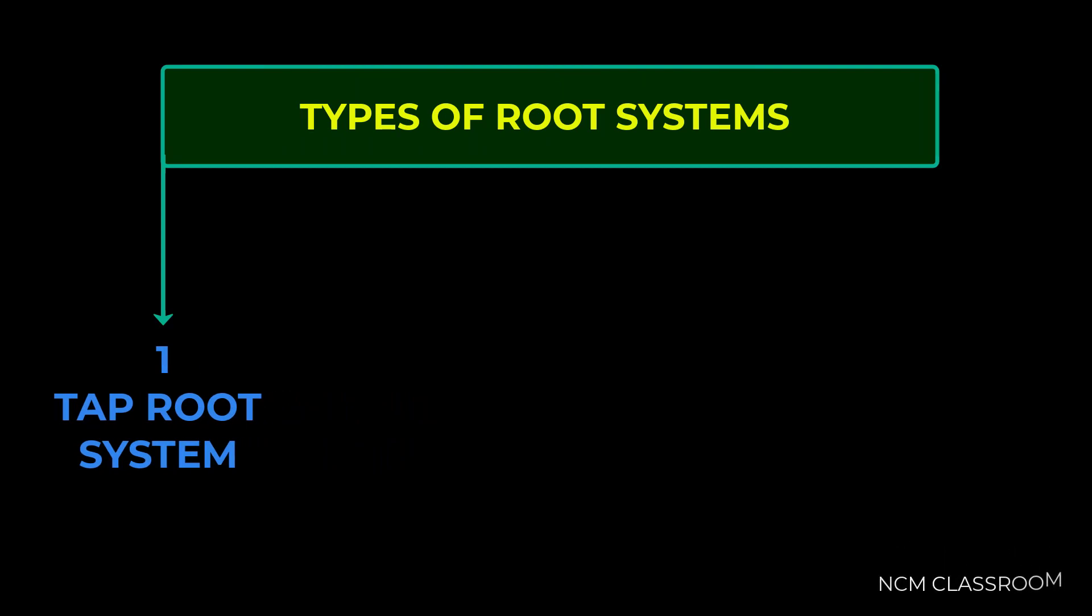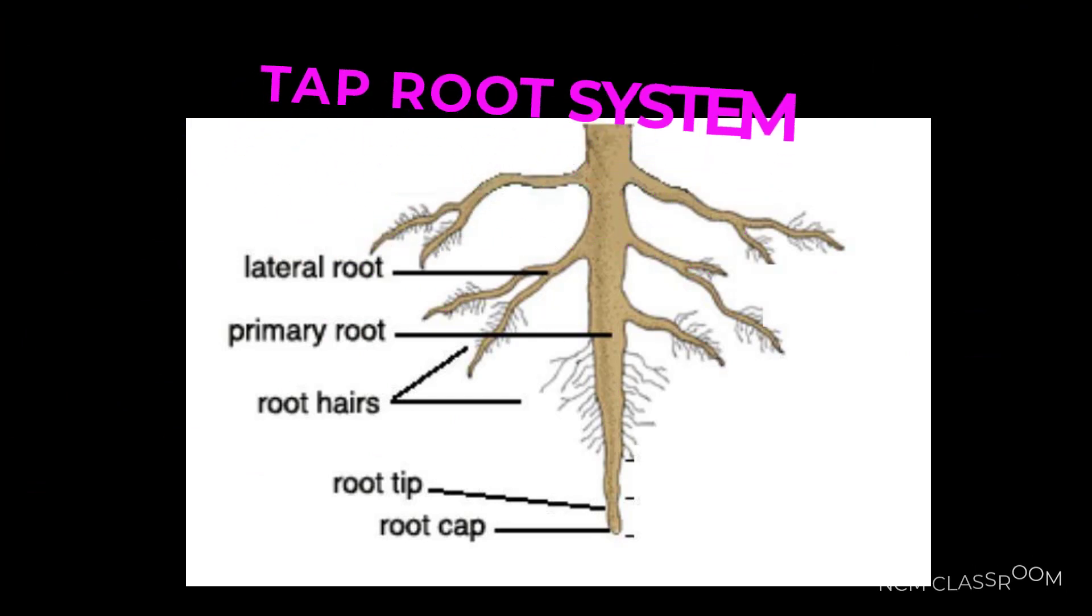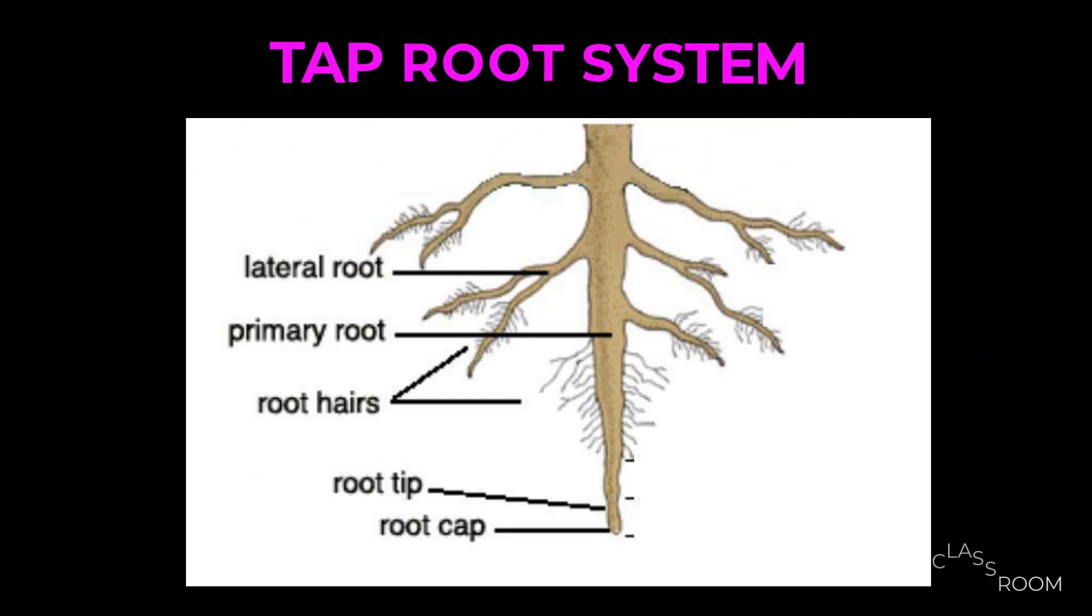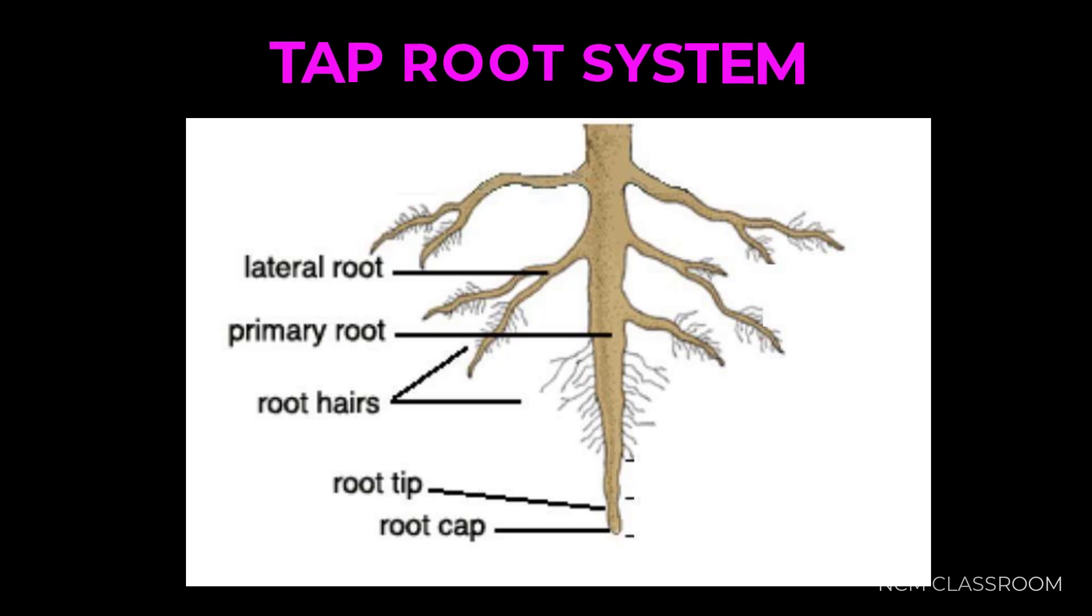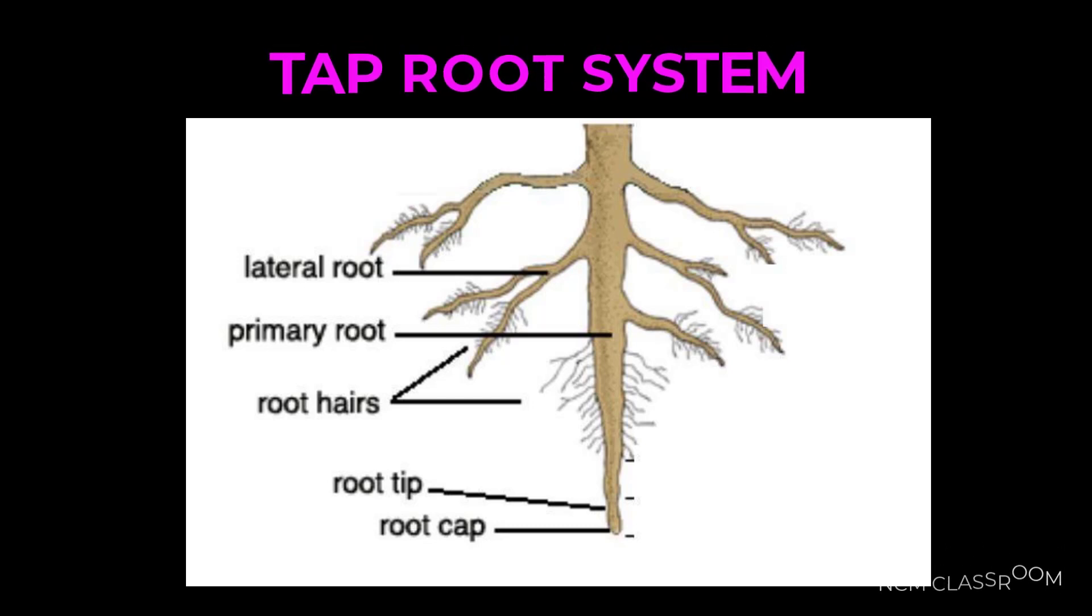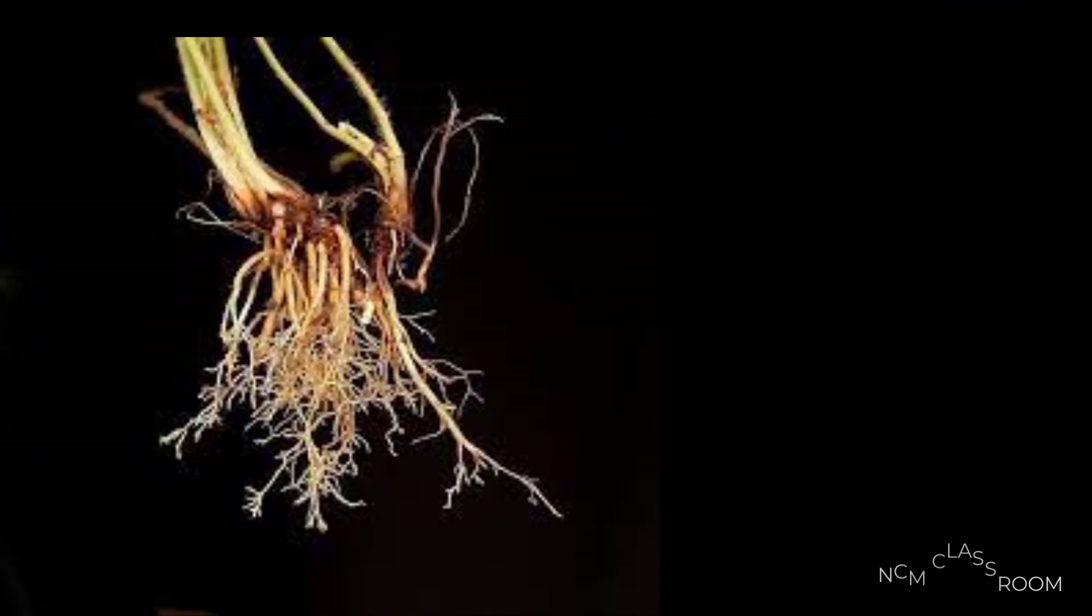Now let us see types of root system. The first one is tap root system and the second one is known as fibrous root system. The tap root system contains the major primary root and the lateral roots arise from this tap root system.